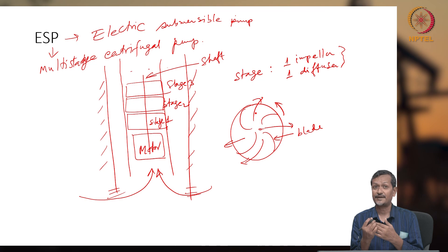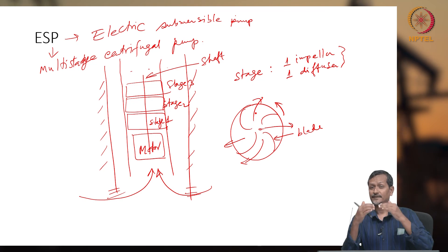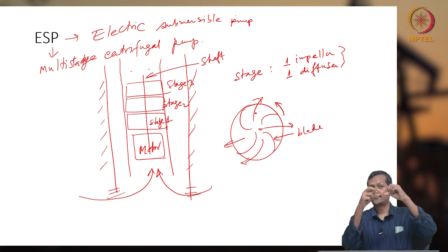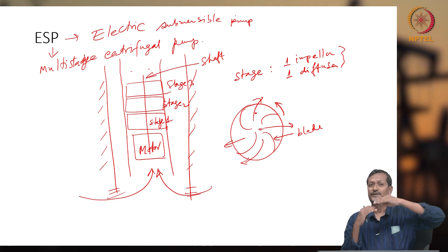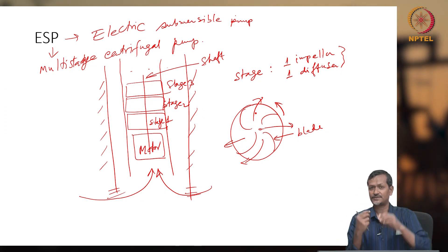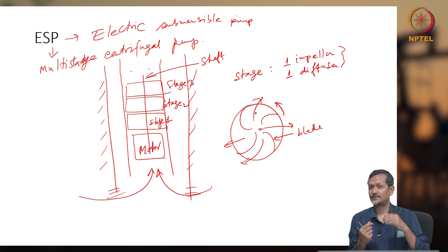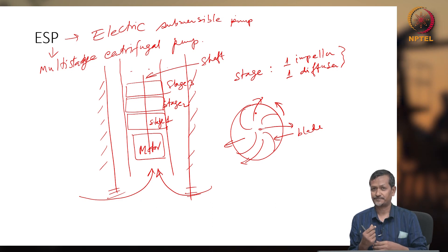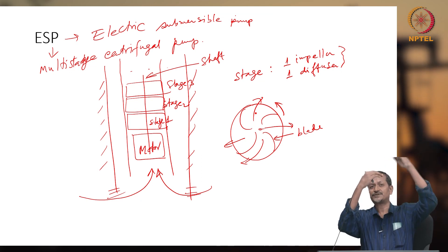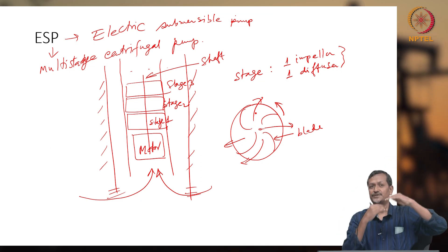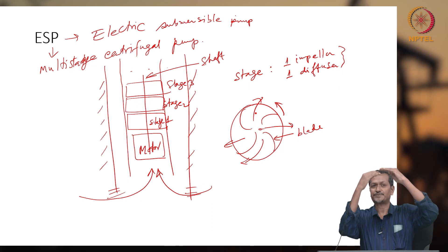When higher pressure is created, that high pressure is fed into another stage, and then another stage, and another, creating multiple stages. For example, if one stage produces 5 bar, two stages produce 10 bar, three stages produce 15 bar, four stages produce 20 bar — so every stage keeps adding pressure.